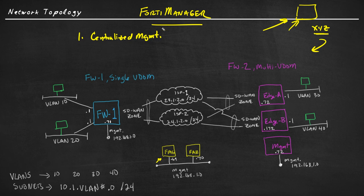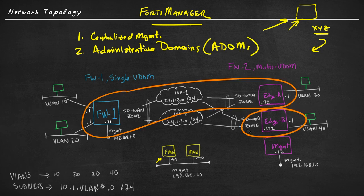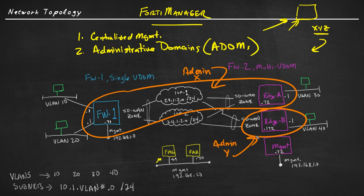Another fantastic tool in FortiManager is the concept of multiple administrative domains, which are affectionately referred to as ADOMs. We can grant administrators different types of permissions based on those ADOMs. So maybe one group of administrators needs full access — admin group X — and another group, admin group Y, gets different rights. We can slice and dice, create administrators, and give them rights only to the administrative domains that they need. This can be very granular.